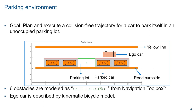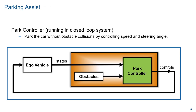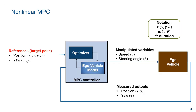The ego car is modeled by a kinematic bicycle model because this is a low-speed application. At a high level, the parking assist is a park controller running in a closed-loop system. The goal for the park controller is to park the car without obstacle collision by controlling speed and steering angle. The park controller knows where the obstacles are and maintains constraints on the distances between the ego car and the obstacles.